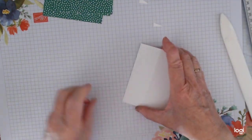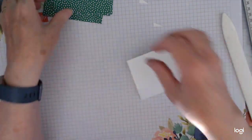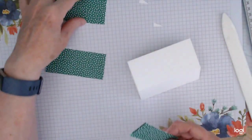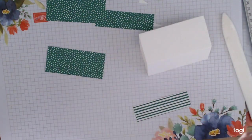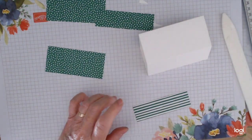Flatten that down, flatten that over. And now we just want to decorate it. So you have all your pieces cut—the two for the top and the bottom, and these two are for the sides.